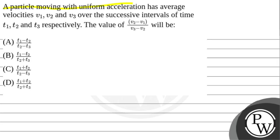A particle moving with uniform acceleration has average velocities v1, v2 and v3 over the successive intervals of time t1, t2 and t3 respectively.